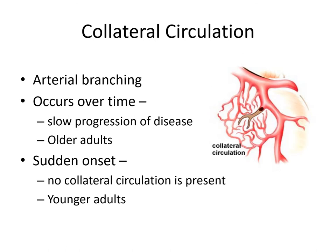Collateral circulation occurs over time — that's additional arterial branching — when there is an occlusion to a coronary artery. You can see how atherosclerosis can be blocking the flow of blood, and then the person responds by growing this additional branching to provide blood flow to areas that aren't receiving it. This is mostly associated with older people because they've had decades to develop this collateral circulation.